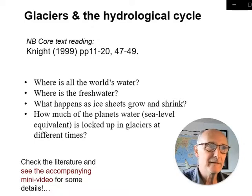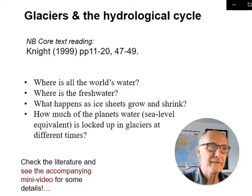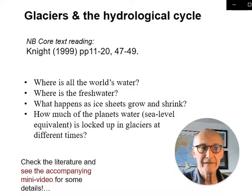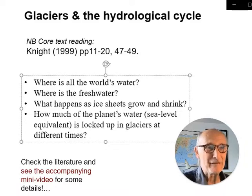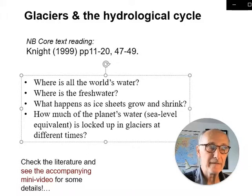A straightforward example — which I'll expand on in another video — is glaciers and the hydrological cycle. There are lots of questions you can ask: where is all the world's water? How much is in the oceans, how much in glaciers? What proportion of the world's freshwater is stored in glaciers? What happens as ice sheets grow and shrink and water is transferred from storage on land to storage in the ocean? You'll find the answers in the textbook, but glaciers are a very important component of the hydrological cycle and depend very much on it for their position in the global system and the way they behave.